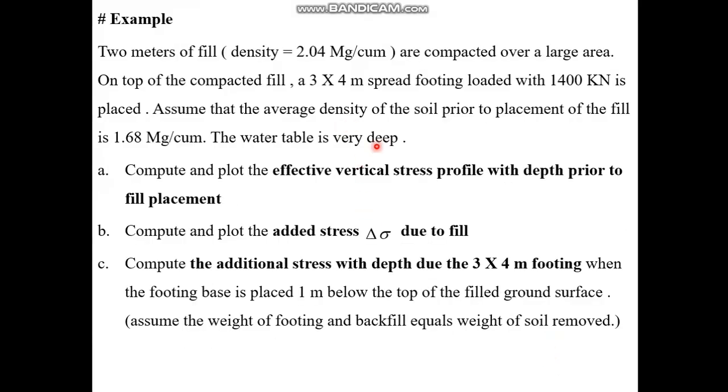Let's work through a practical example. Two meters of fill with a density of 2.04 Mg/m³ are compacted over a large area. On top of the compacted fill, a spread footing with dimensions 3m by 4m is placed.